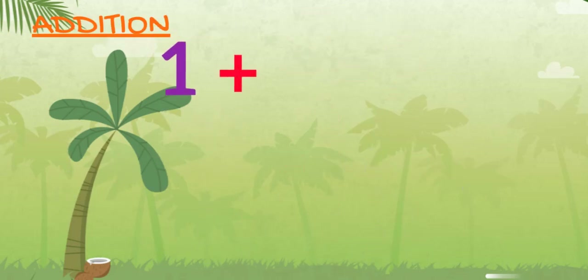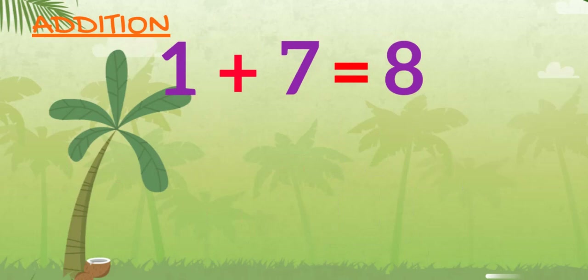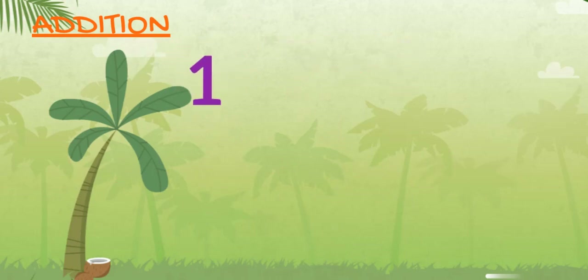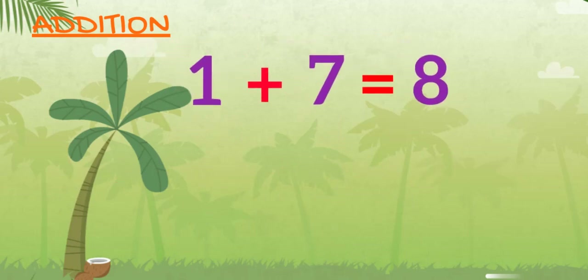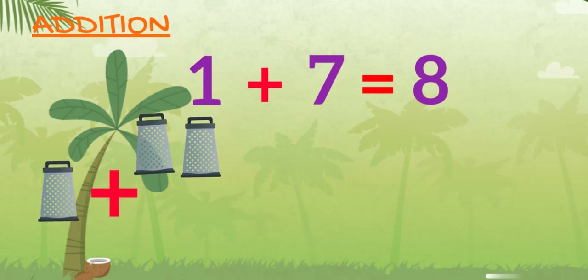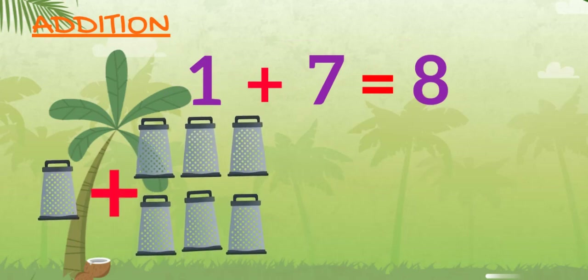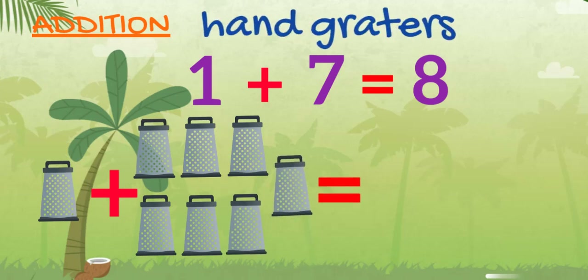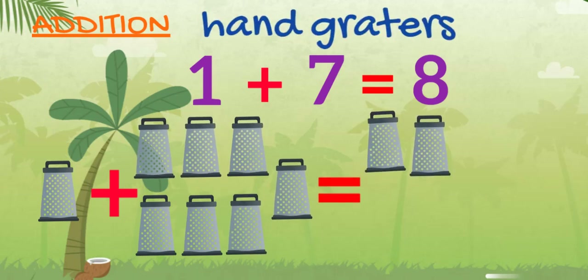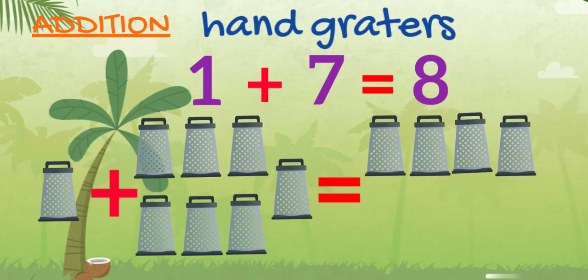1 plus 7 equals 8. 1 hand grater plus 7 hand graters equals 8 hand graters.